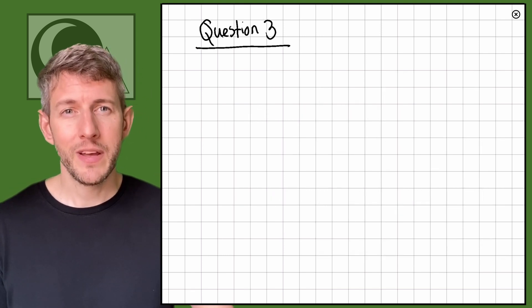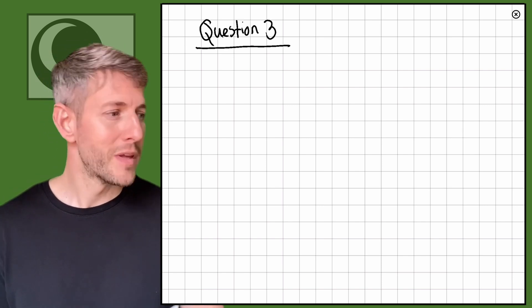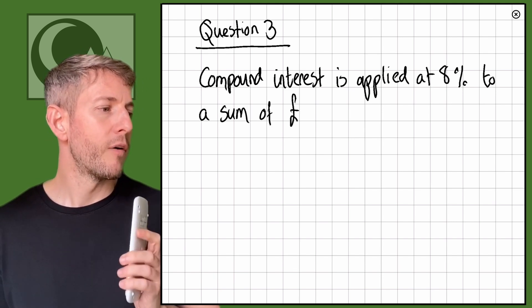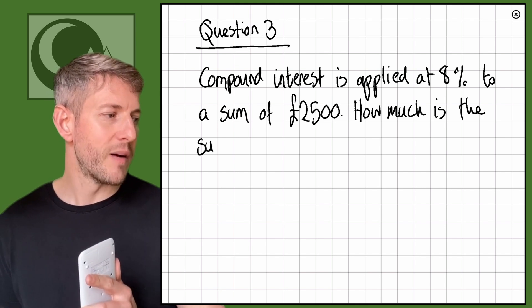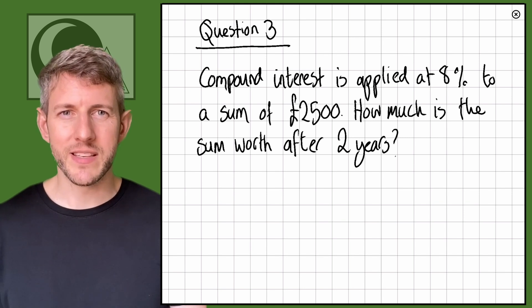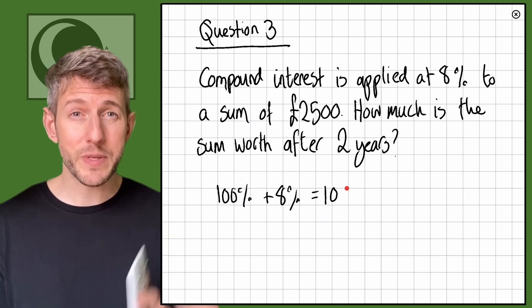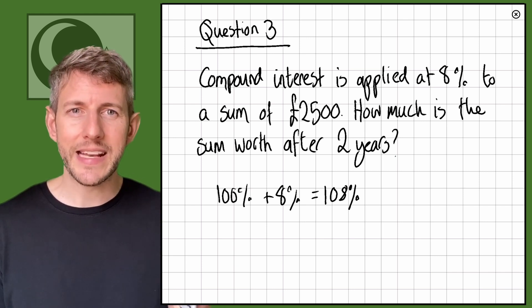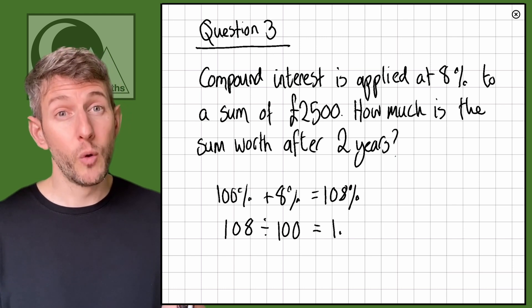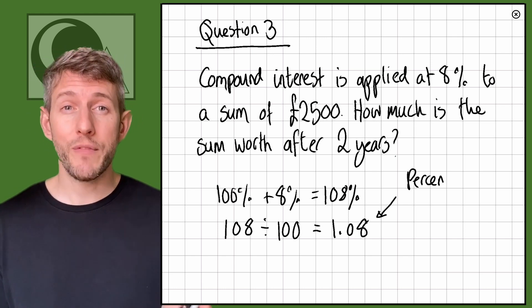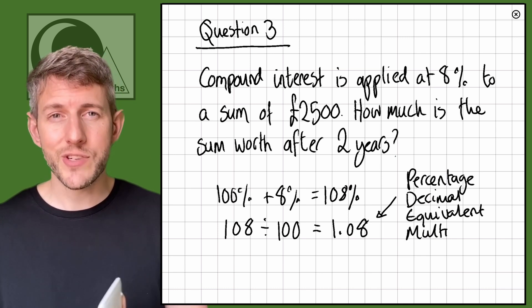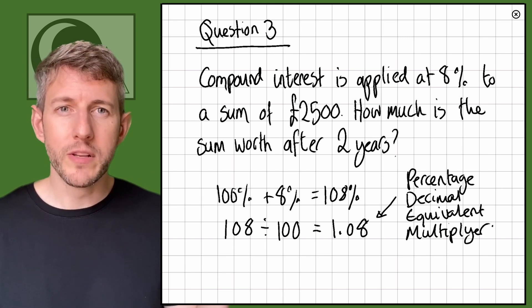Let's have a look at question three. Compound interest is applied at 8% to a sum of £2,500. How much is the sum worth after two years? We want an 8% increase, so we're ending up with 108%. The percentage decimal equivalent multiplier: 108 divided by 100 equals 1.08. That's our multiplier.